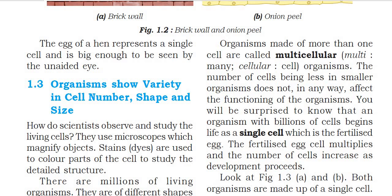Organisms made up of more than one cell are called multicellular organisms. 'Multi' means many, 'cellular' means cells. So organisms that are made up of more than one cell are called multicellular organisms.